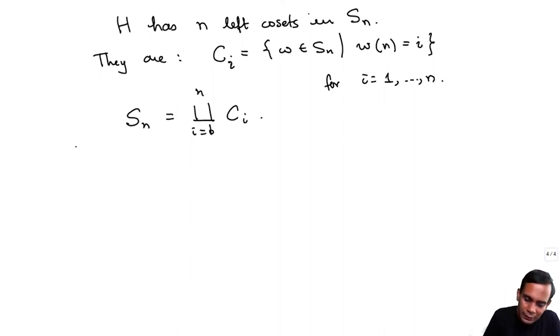And what we have is SN is a disjoint union of CI for I going from 1 to N. So what we are going to be interested in now is how a group decomposes into cosets.